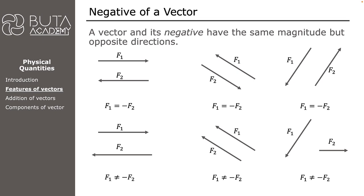It is up to us to choose which direction is positive and which is negative. By convention, on a horizontal axis the right direction and on a vertical axis the upward direction are accepted as positive — but we can decide to choose left as positive and right as negative.